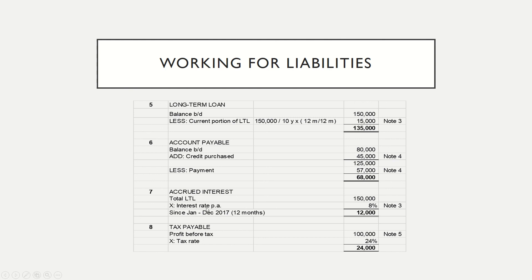Working 7: accrued interest equals RM12,000, calculated by multiplying the interest rate per annum of 8% by the total long-term loan amount. This is the accrued interest for one year from January 2017 to 31st December 2017. You can refer to Note 3, which states that annual payment of principal must be made every 1st January beginning 2018, together with 8% per annum interest on the outstanding loan balance.